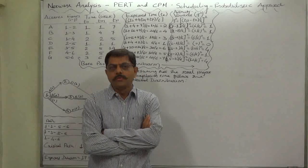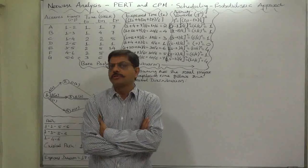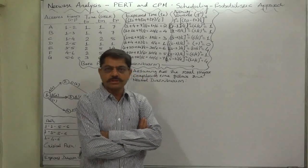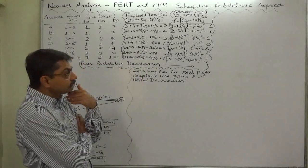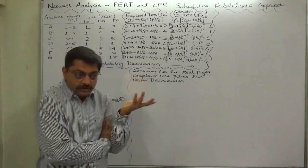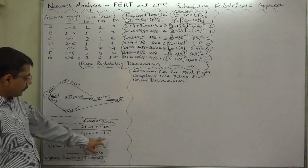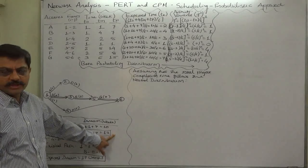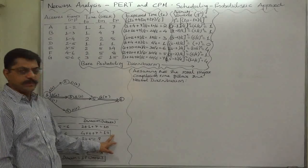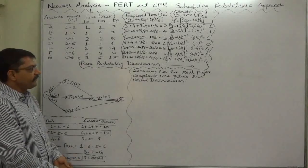Now, if we assume that the total project completion time follows the normal distribution, we can make calculations about other expectations — for example, whether we can complete the project before the expected completion time, or what is the probability of completing the project before or after this expected time, and other such questions.